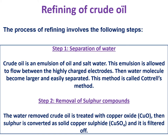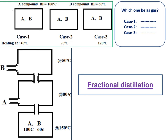Before going to fractional distillation, let us understand some basic points with an exercise. Consider three beakers each containing two liquid compounds A and B mixed together. A has a boiling point of 100 degrees centigrade — consider it as water — and B has a boiling point of 60 degrees centigrade — consider it as gasoline. In case one, we heat the beaker at 40 degrees centigrade; in case two at 70 degrees centigrade; and in case three at 120 degrees centigrade.